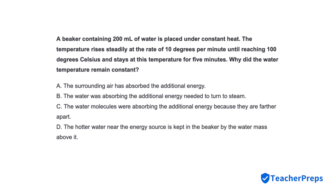A beaker containing 200 milliliters of water is placed under constant heat. The temperature rises steadily at the rate of 10 degrees per minute until reaching 100 degrees Celsius, and stays at this temperature for 5 minutes. Why did the water temperature remain constant? Correct response is letter B: The water was absorbing the additional energy needed to turn to steam.